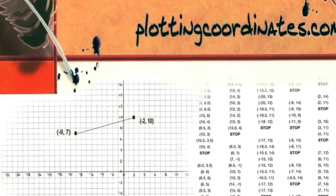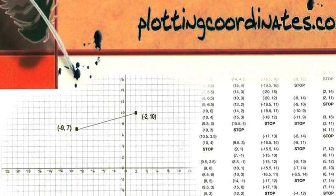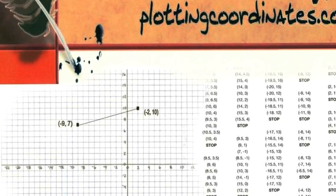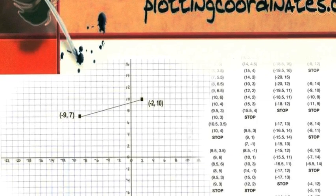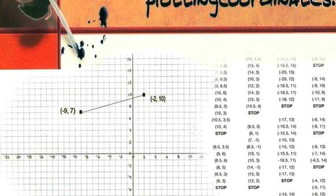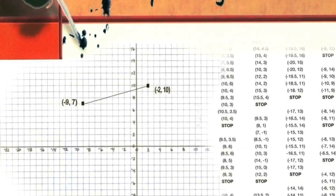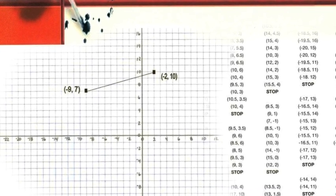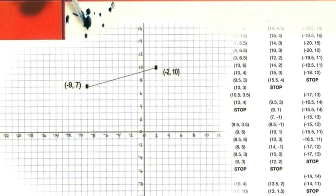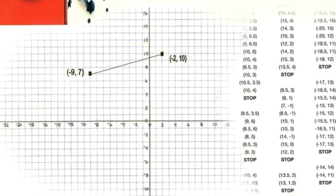This is a how-to video that demonstrates plotting x and y coordinates on a Cartesian plane, also known as a coordinate grid. The Cartesian grid is created by the intersection of two number lines: a horizontal number line called the x-axis and a vertical number line called the y-axis. As they intersect at the point zero, zero, also called the point of origin, four quadrants are formed.